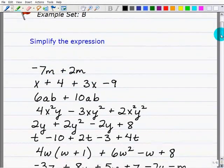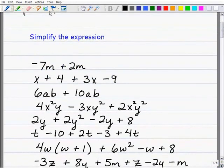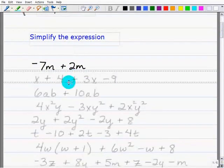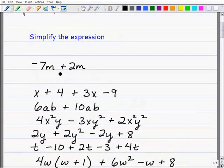So what we want to do is simplify these expressions. In other words, we want to make them as simple as possible. So we have an expression here, for example, negative 7m plus 2m. And the question is, is there a simpler way to write this? And in fact, there is.